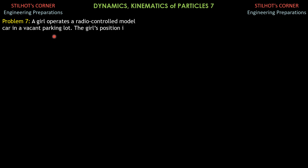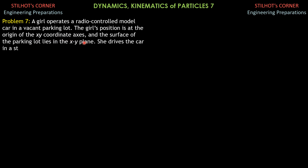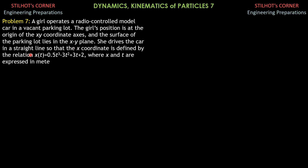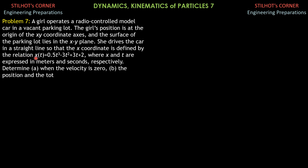A girl operates a radio-controlled model car in a vacant parking lot. The girl's position is at the origin of the xy coordinate axis and the surface of the parking lot lies in the xy plane. She drives the car in a straight line so that the x coordinate is defined by the relation: x as a function of time equals 0.5t³ minus 3t² plus 3t plus 2, where x and t are expressed in meters and seconds respectively. Determine when the velocity is 0, and the position and the total distance traveled when the acceleration is 0.